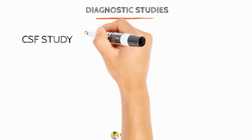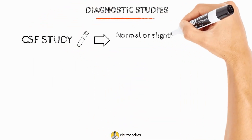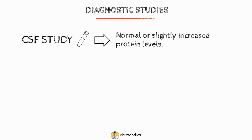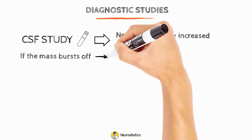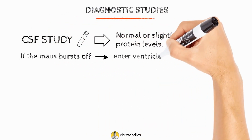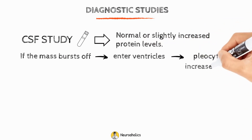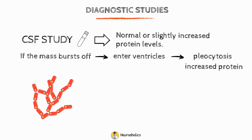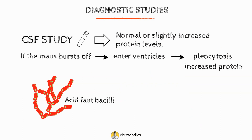When a mass is located close to the meninges, a CSF study will indicate a normal or slightly raised protein content. If the mass bursts and enters the ventricles, there will be an obvious pleocytosis and increased protein levels. Acid-fast bacilli may be seen in a stereotactic biopsy or after surgical excision.